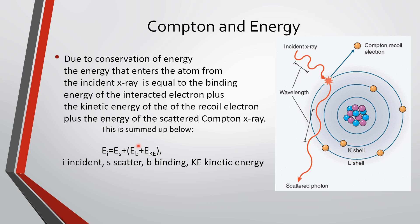The scattered photon carries off in a new direction with the remaining energy. You can see in the diagram that the wavelength of the scattered photon is longer than it was coming in, meaning it is a less energetic photon. Mathematically, the incident photon energy equals the scattered photon energy plus the binding energy given to the atom plus the kinetic energy of the Compton electron.